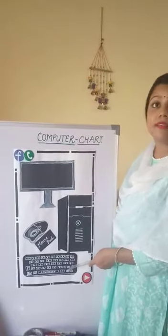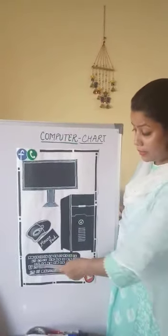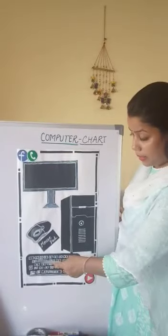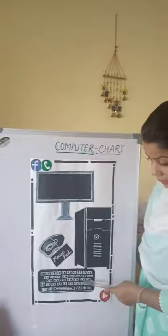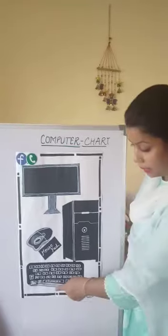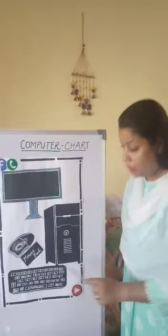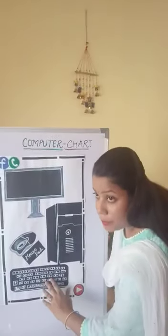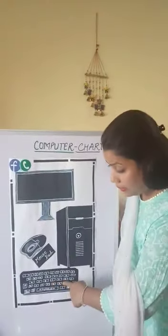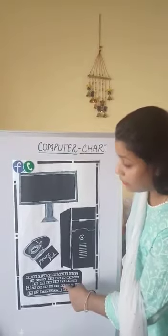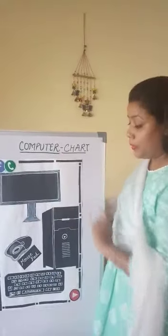The second part is the keyboard. A keyboard has number keys, numeric keys, some alphabet keys, and some special character keys. On the keyboard, we can type any number or any alphabets, and that is going to be reflected on the monitor screen.